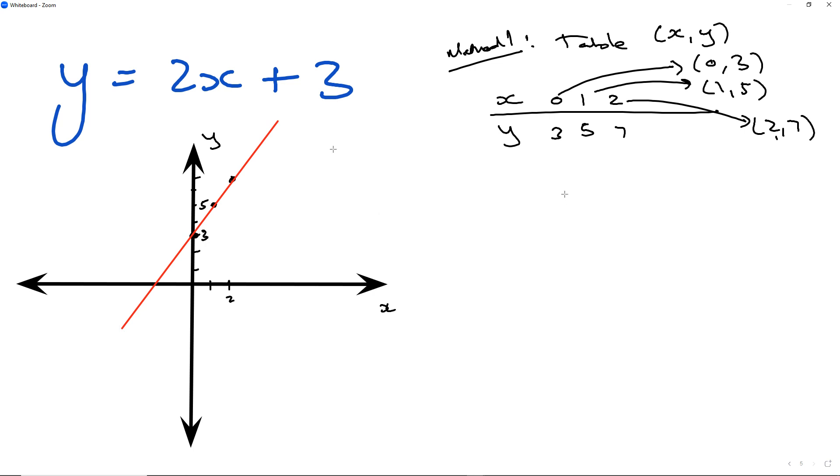The easiest method is using the table method. Then you get method number two. You can go to the equation and say, well, y is equal to 2x plus 3, so that's where it's going to cut the y-axis.